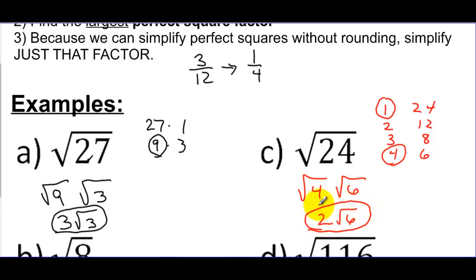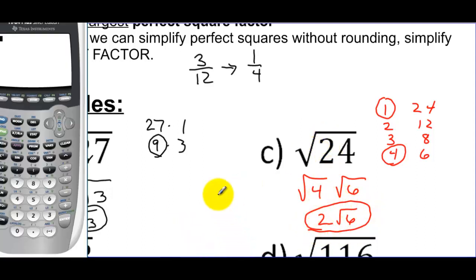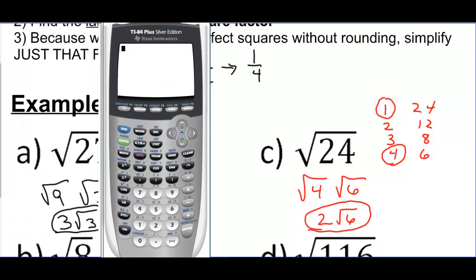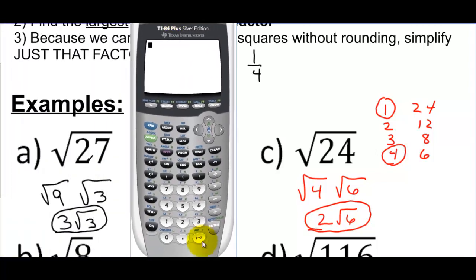Here's a nice thing about this: if you want to check to see if you did this correctly, you can go to a calculator. If I did the square root of 24 on the calculator, it's going to give me the decimal equivalent of the square root of 24. If I type in the simplified version — 2 times the square root of 6 — it should be the same thing.